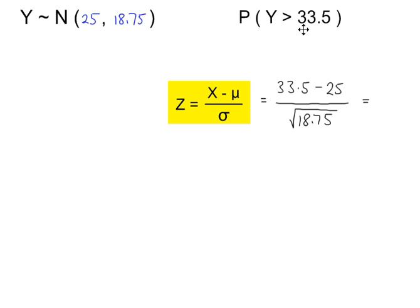So standardizing using the standardizing formula, the mean is 25 here, we're dividing by the standard deviation, but this value here is a variance, so we need to square root it, that gives 1.963.